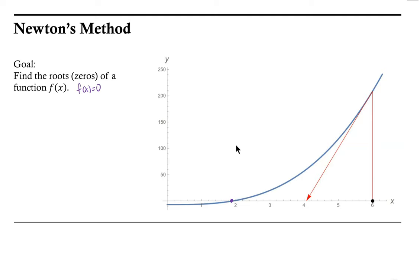This process begins with an initial guess. In this case, 6 looks like our initial guess, and we're going to call that initial guess x naught. With that initial guess, there is a corresponding point on the graph of the function that corresponds to an input value of x naught and an output value of f of x naught.